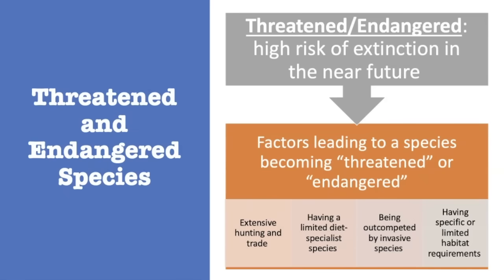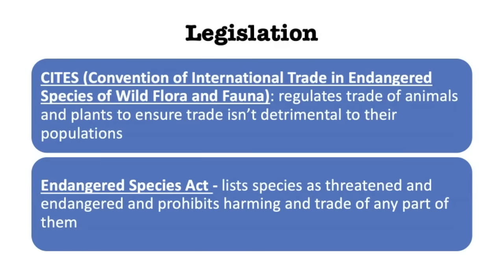The factors that make up HIPPCO often lead to threatened and endangered species, and in the United States we have the Endangered Species Act to help protect these species. Threatened and endangered species are at high risk of extinction in the immediate future. Factors that lead to species becoming threatened and endangered include over-exploitation, extensive hunting and trade, being very specialist species (picky about where they live and what they eat), being outcompeted by invasive species introduced by people, and having very specific habitat requirements. There's also the CITES trade agreement, done internationally, designed to help countries work together to regulate the trade of animals and plants to ensure that trade is not detrimental to their populations.